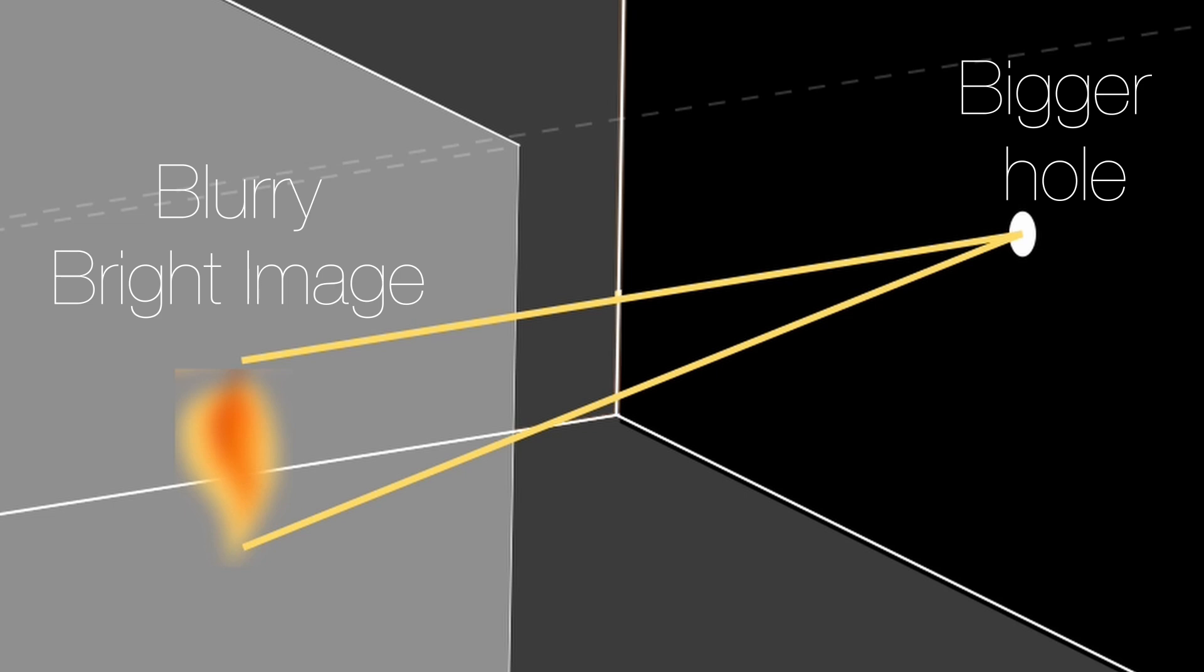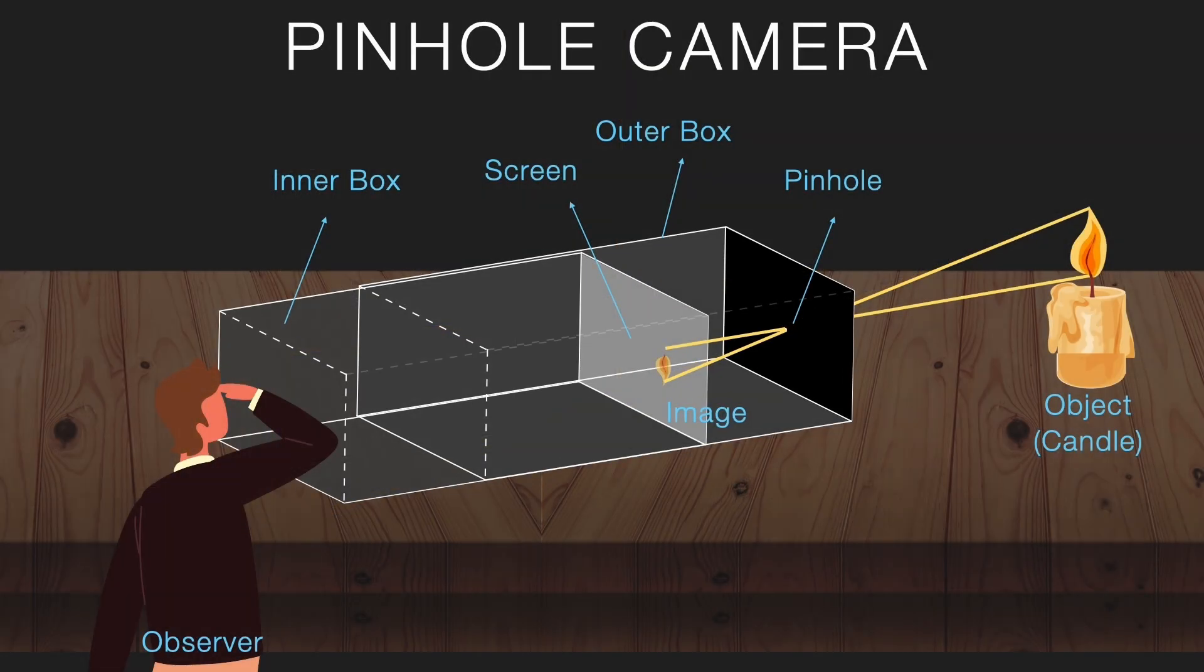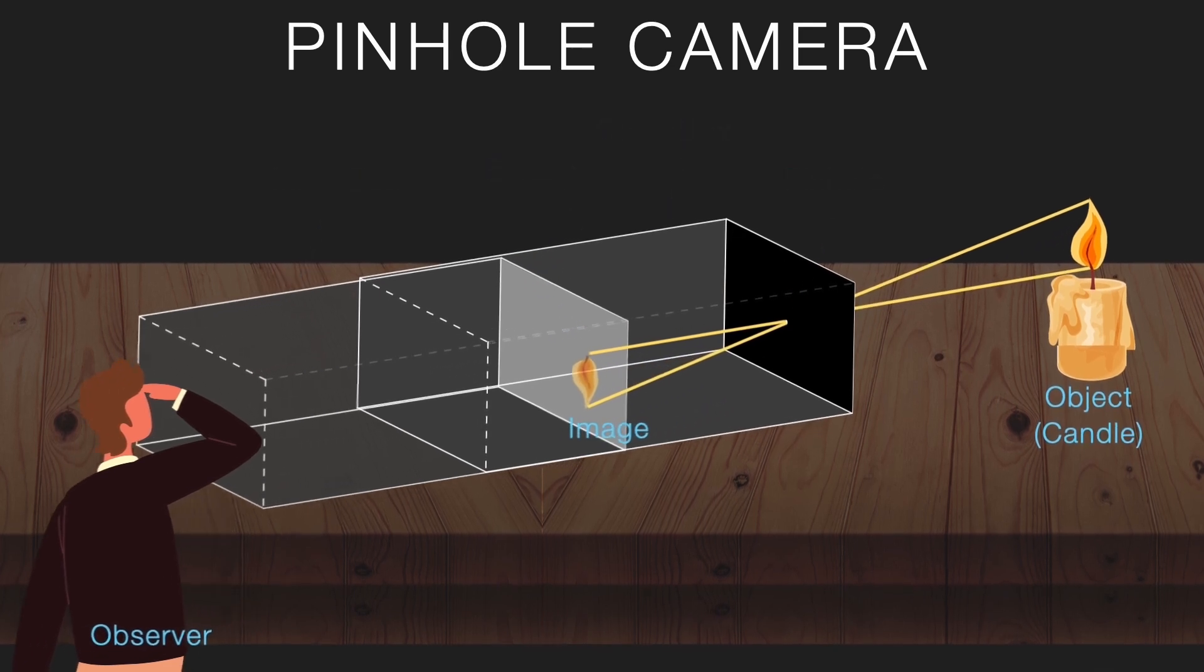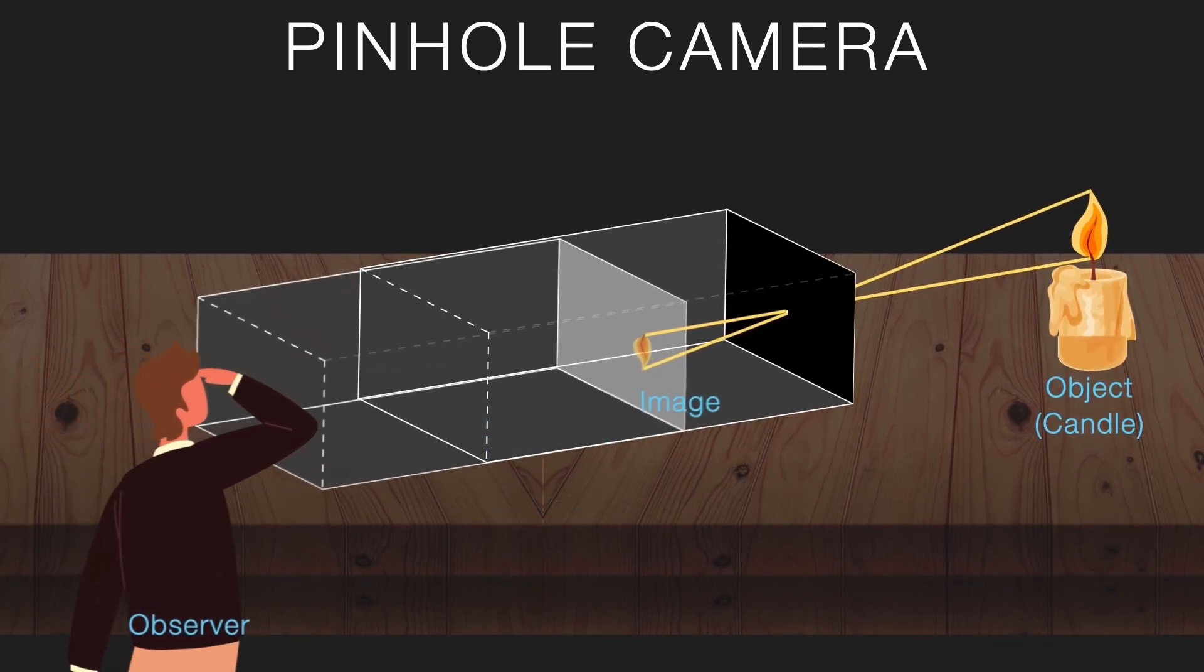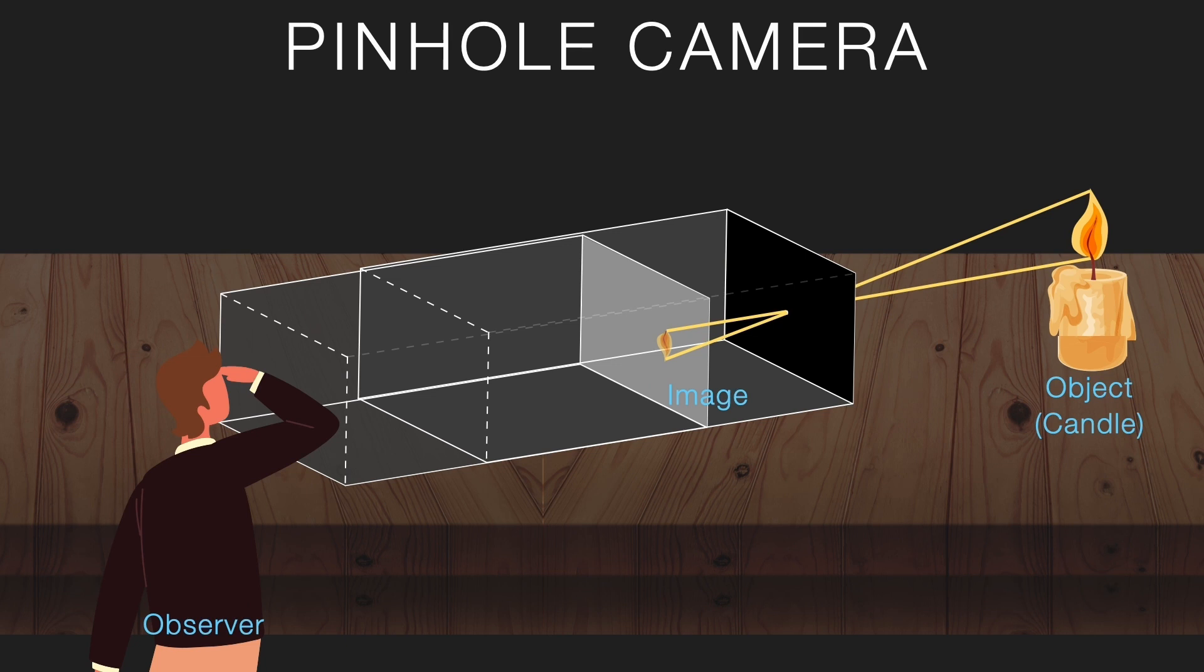And if you play around with the inner box—that is, the screen—you can change the size of the image. Push the screen farther away from the hole and the image gets bigger. Bring it closer and the image shrinks.